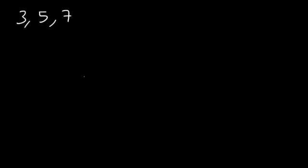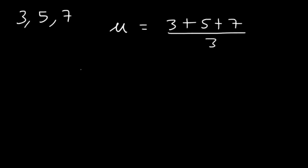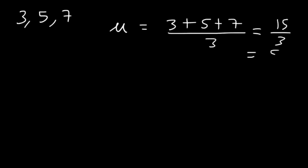Now let's calculate the population standard deviation for the set 3, 5, and 7. The first thing we should do is calculate the mean. The mean is the sum of all the numbers divided by 3. Because the three numbers are evenly spaced apart, the mean is going to be the middle number, 5. 3 plus 5 is 8, 8 plus 7 is 15, and 15 divided by 3 is 5.